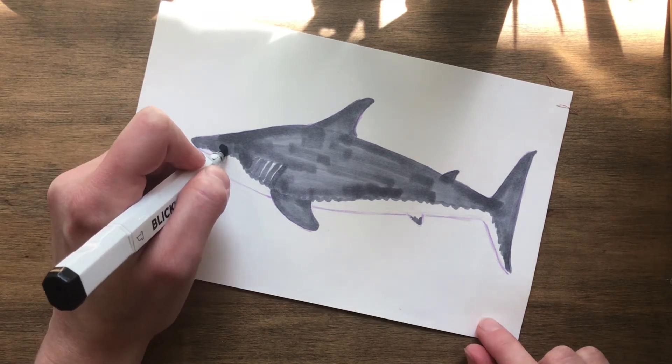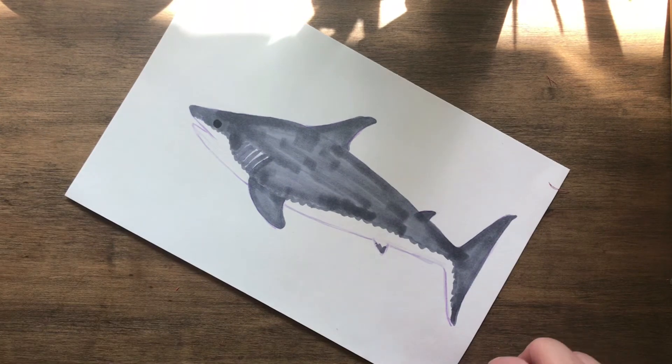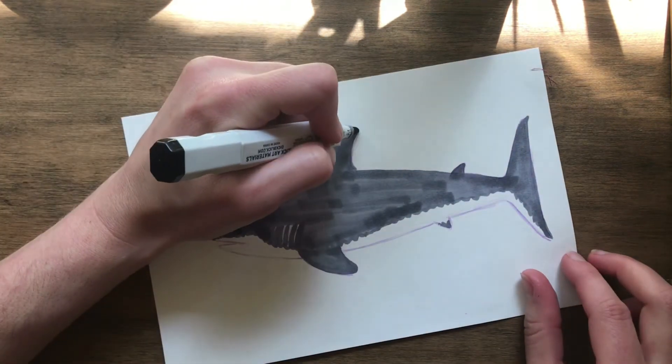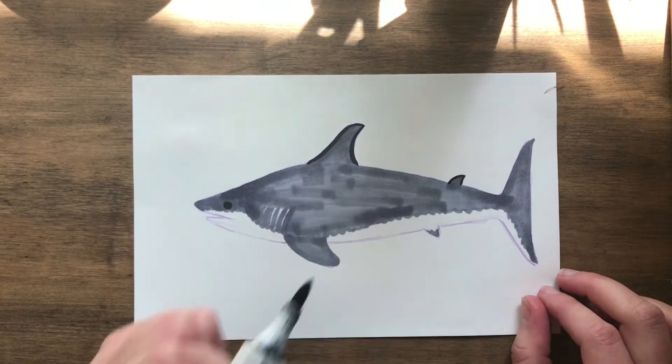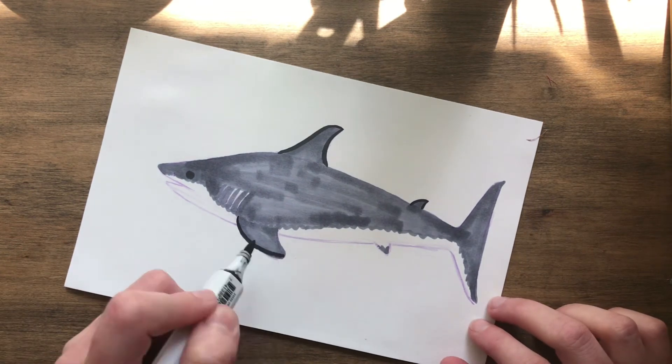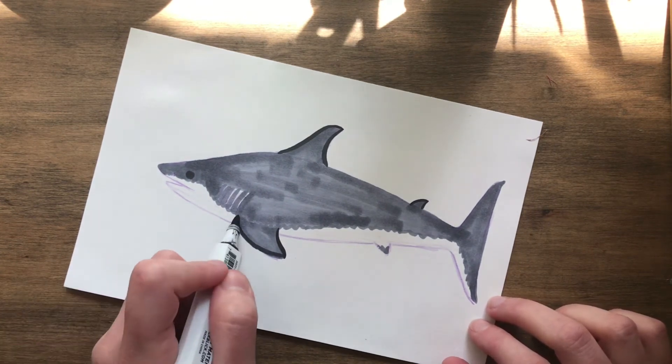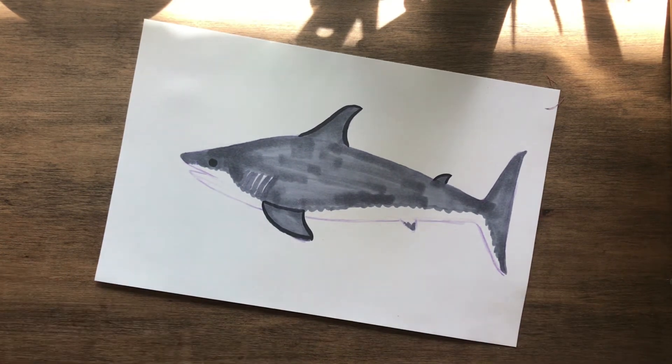Okay color in the eye black. And then we are going to outline the top fin with black. And the little fin. And the side fin. And draw a little line there. It's a shadow.